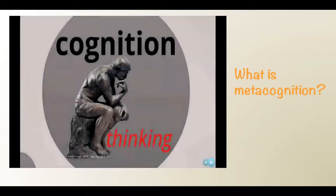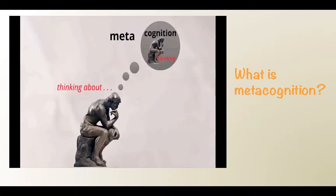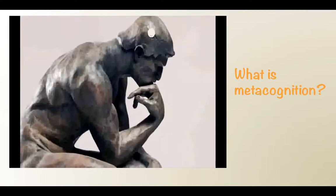Cognition is the realm of thinking. Metacognition is the realm of thinking about thinking — not thinking about the phenomenon of thought in general or the nature of knowledge in the philosophical sense, but reflecting on your own thinking process. If cognition is what happens in your mind while you're engaged in learning, metacognition is what happens in your mind when you're engaged in monitoring and managing your learning.